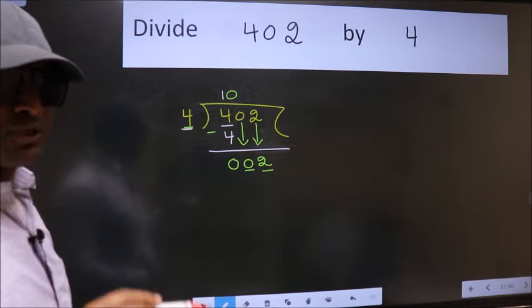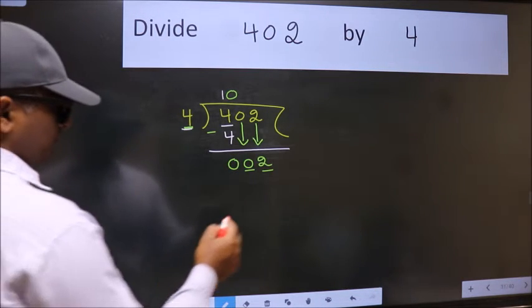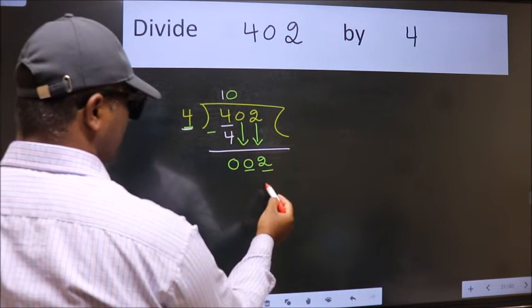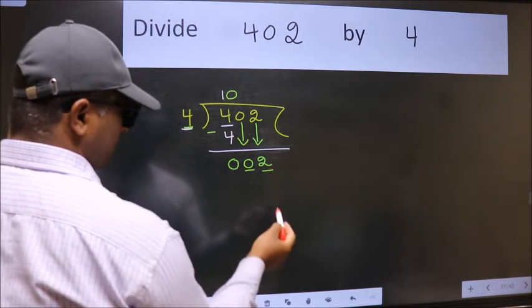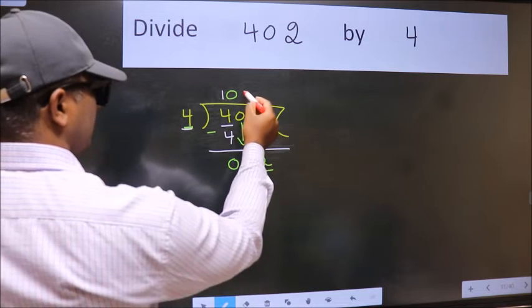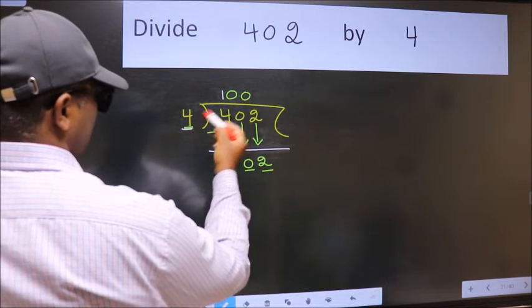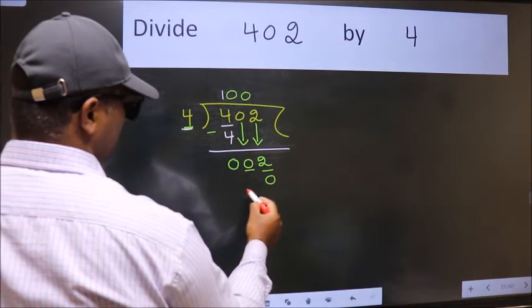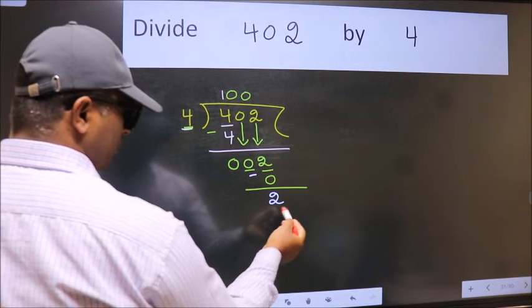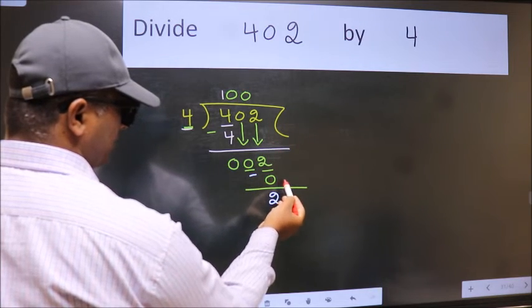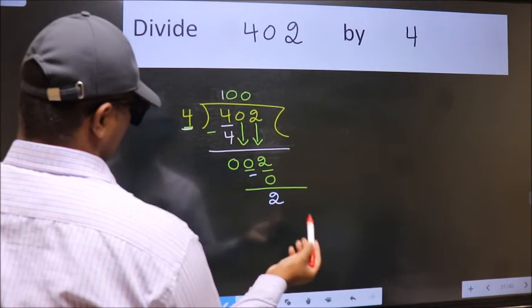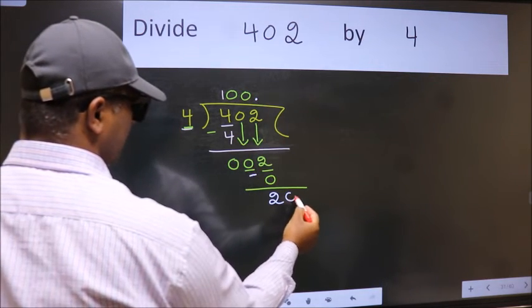Instead of that, what we should think of doing is, which number should we take here? If I take 1, we will get 4. But 4 is larger than 2. So what we do is, we take 0 here. So 4 into 0, 0. Now we subtract, we get 2. Over here, we did not bring any number down. And 2 smaller than 4. So now we can put dot dot and take 0.